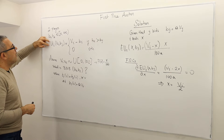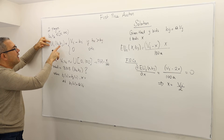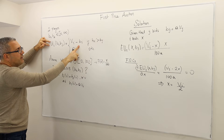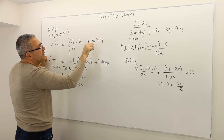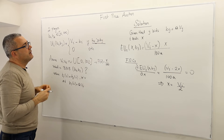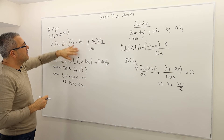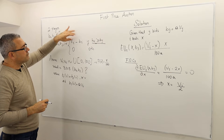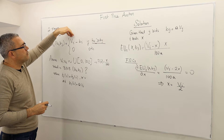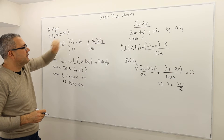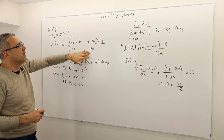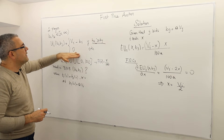So therefore the payoff of player I, given that he bid B_I and his opponent bid B_J: if he wins — meaning his bid is higher than or equal to his opponent's bid — he's going to get V_I minus B_I, his willingness to pay minus the actual price he pays. If he loses, which means his bid was strictly less than the bid of the opponent, he's going to get zero.